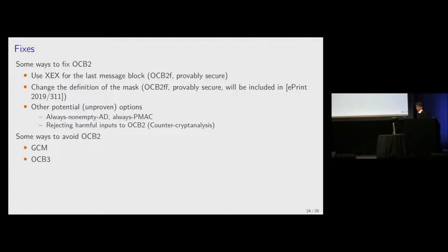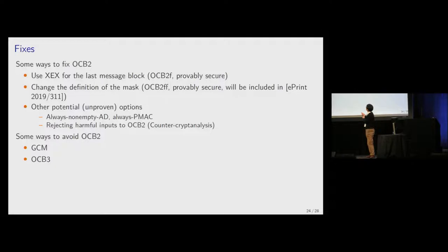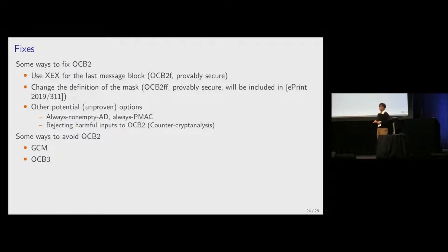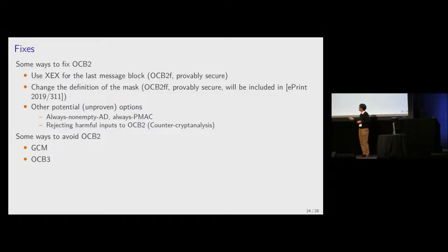A lesson learned: we have to prove all statements, and we also have to carefully check that they fit together nicely — which was not the case in OCB2. There are some ways to fix OCB2: we can change the definition to use XEX for the last message block, with a proof of security for this fix. We can also change the definition of the mask. Of course, it is reasonable to avoid using OCB2 and instead use GCM or OCB3.